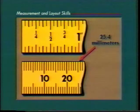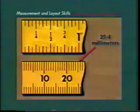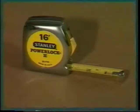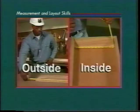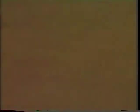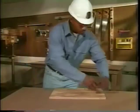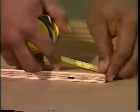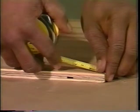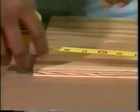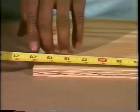You can make measurements in either system. Using a tape measure, you can make outside and inside measurements. When measuring an outside length of a board, place the hook of the tape over the edge of the board and pull the tape until the blade extends over the opposite edge.